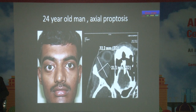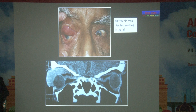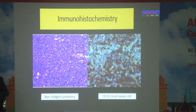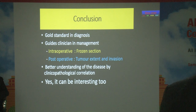The orbit is a Pandora's box — you can get any kind of tumor. This is a 24-year-old man with axial proptosis. You can see an intraconal mass lesion, and histopathology showed adenoid cystic carcinoma with a cribriform pattern and perineural invasion. This is a 60-year-old man with painless swelling in the lid, showing a smooth homogenous mass over the eyelid. Histopathology showed monomorphic lymphoid cells suggestive of non-Hodgkin's lymphoma, requiring immunohistochemistry. B-cell marker was positive, indicating B-cell lymphoma, which is the most common lymphoma in the orbit.